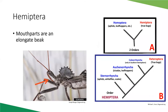Hemiptera have mouth parts like a long beak, which they use to attack other insects or feed on plants. Traditionally, Homoptera and Hemiptera were two separate orders, but within the last 15 to 20 years these two groups have been lumped together into Hemiptera. What used to be called Hemiptera is now Heteroptera. You may still find them separated in some internet searches, but entomologists now treat them as one group.